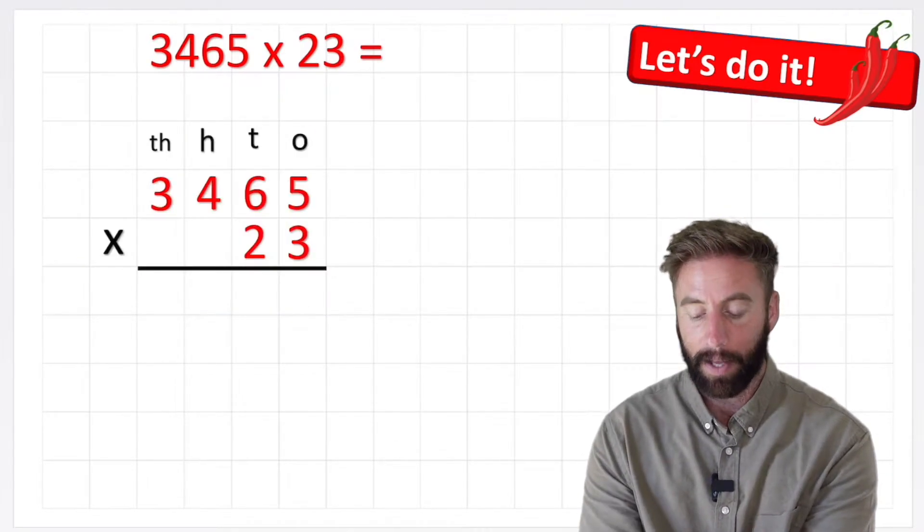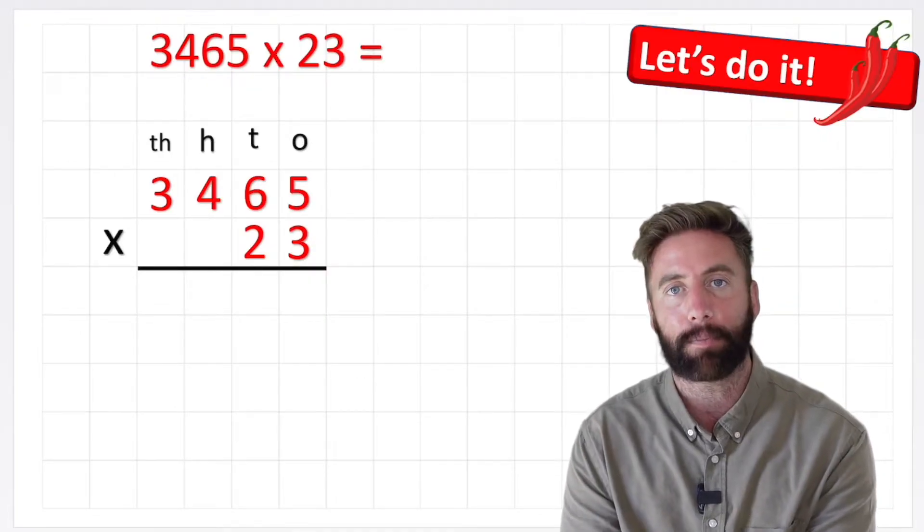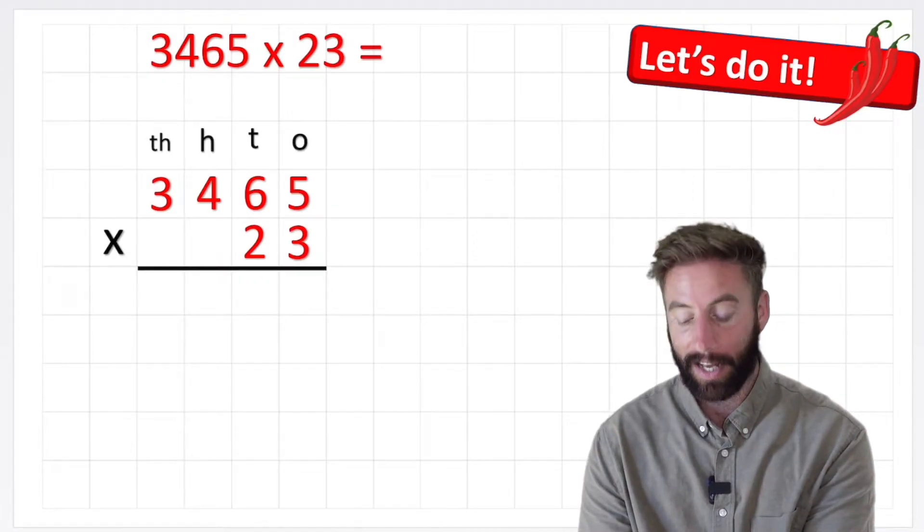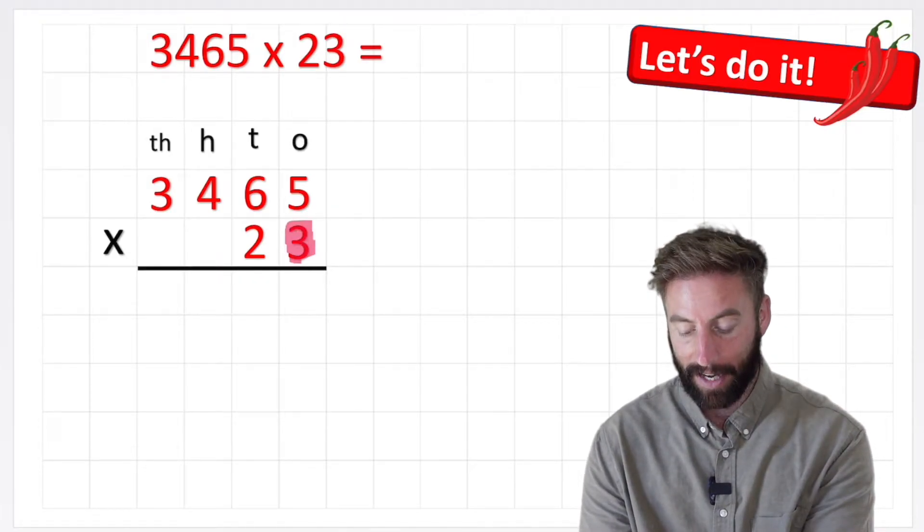Let's tidy it up, there we go. The next step said to partition my question, and we're going to partition specifically this bottom row. And we're going to look at it as a 3 and a 20.